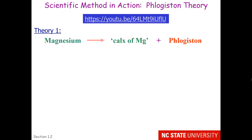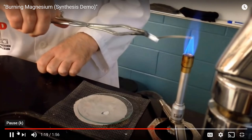Here's a theory that initially was very well bought into in the past. That was the idea that magnesium ribbon, when it burns, gives off something called calcs of magnesium and phlogiston. If you've never seen magnesium ribbon burn, let me show that to you. We'll go to this link here, and I'll show you a brief amount. The burning of magnesium.